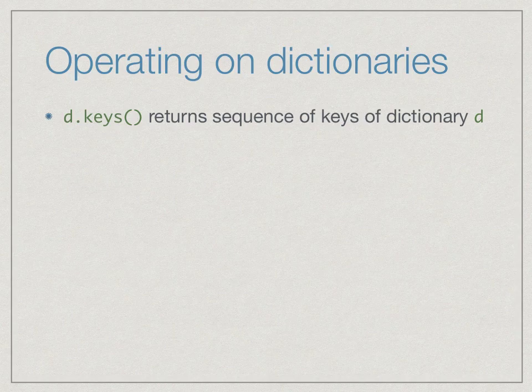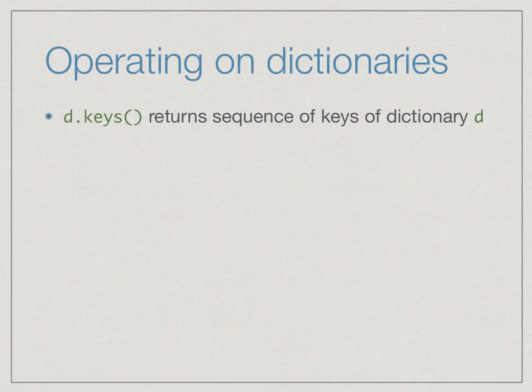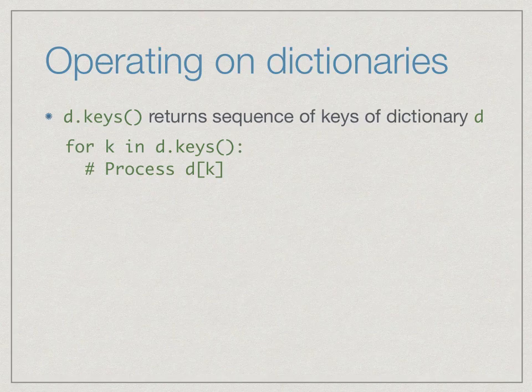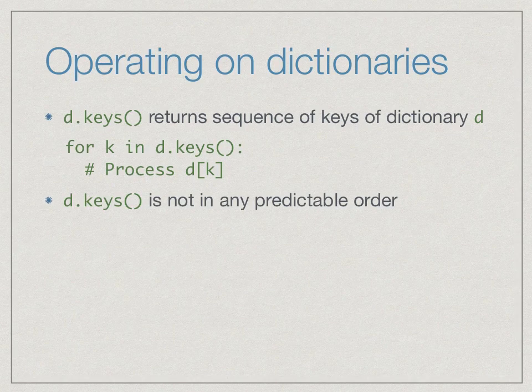To process a dictionary we need to run through all the values. One way is to extract the keys and retrieve each value in turn. There is a function d.keys() which returns a sequence of keys of dictionary d. The typical pattern is: for every key k in d.keys(), do something with d[k]. This is analogous to looping over positions in a list and accessing d[k] — for every key, process the associated value.